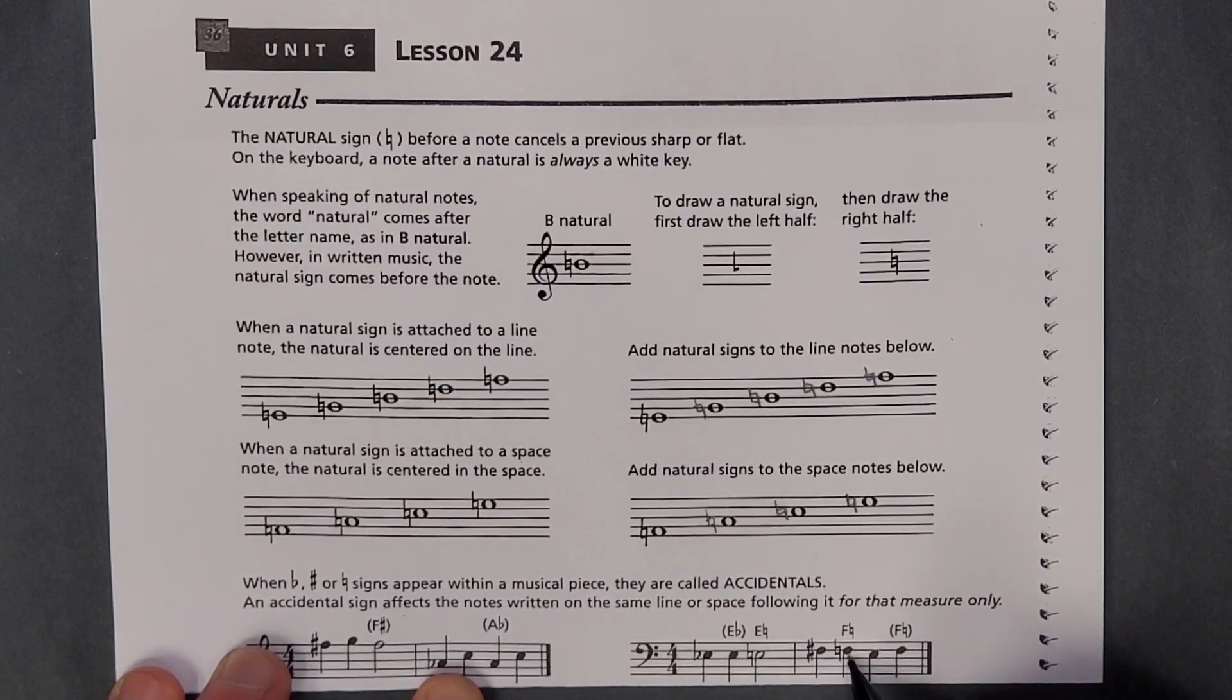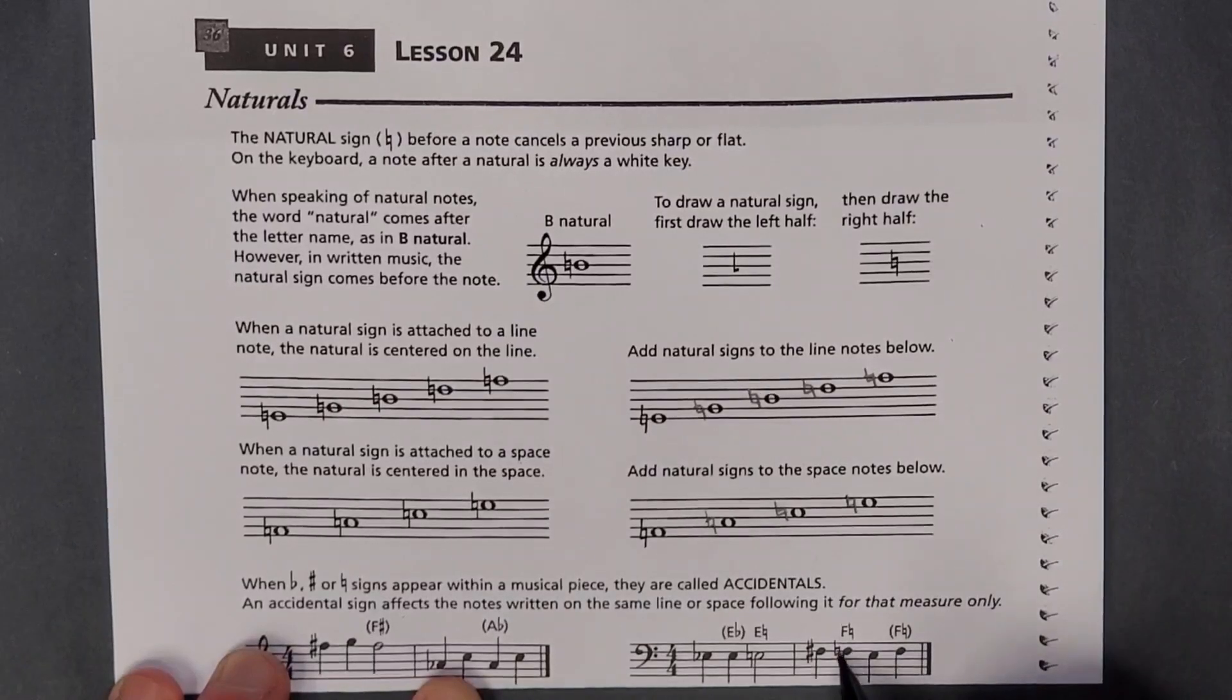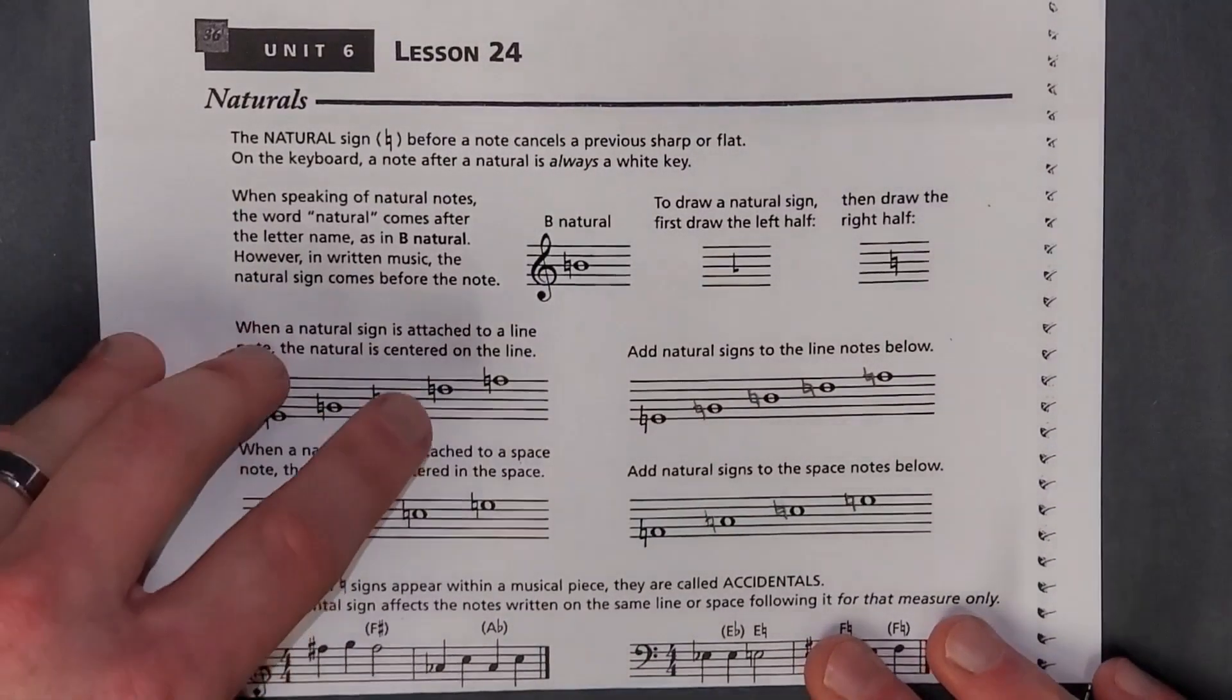And same here. F sharp goes to F natural, drops down to E, and then back up to F natural. So if you wanted that sharp, you'd have to indicate sharp again, because this natural cancels it out. Let's flip it over.